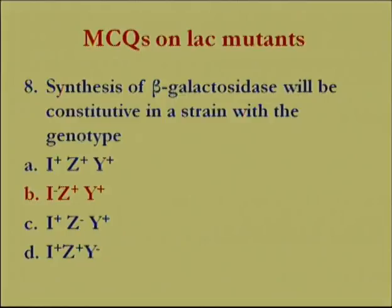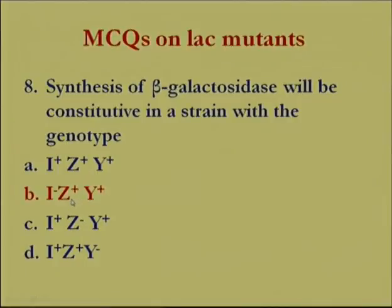MCQs on lac mutants: Question 1 asks in which strain synthesis of beta-galactosidase will be constitutive. In option A, the repressor is wild-type so constitutive expression will not result. In option D, the beta-galactoside permease is non-functional. The correct option is B.